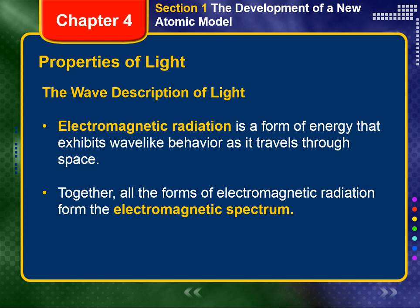The Rutherford model of the atom was an improvement over previous models, but it was incomplete. It did not explain where the atom's negatively charged electrons are located in the space surrounding its positively charged nucleus. After all, it was well known that oppositely charged particles attract each other. So what prevented the negative electrons from being drawn into the positive nucleus?